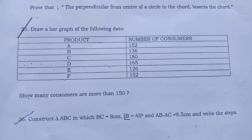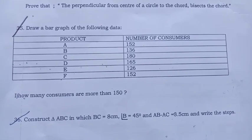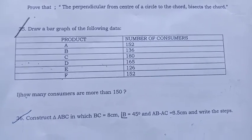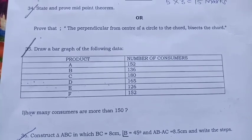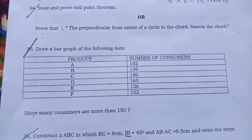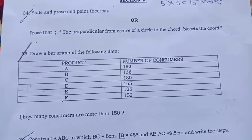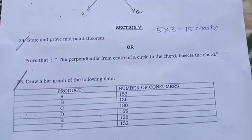Construct triangle ABC in which BC equal to 8 cm, angle B 45 degree and AB minus AC equal to 3.5 cm and write the steps. Here, this completes the question paper. Watch our channel regularly and those who have not subscribed, subscribe. Thank you for watching.